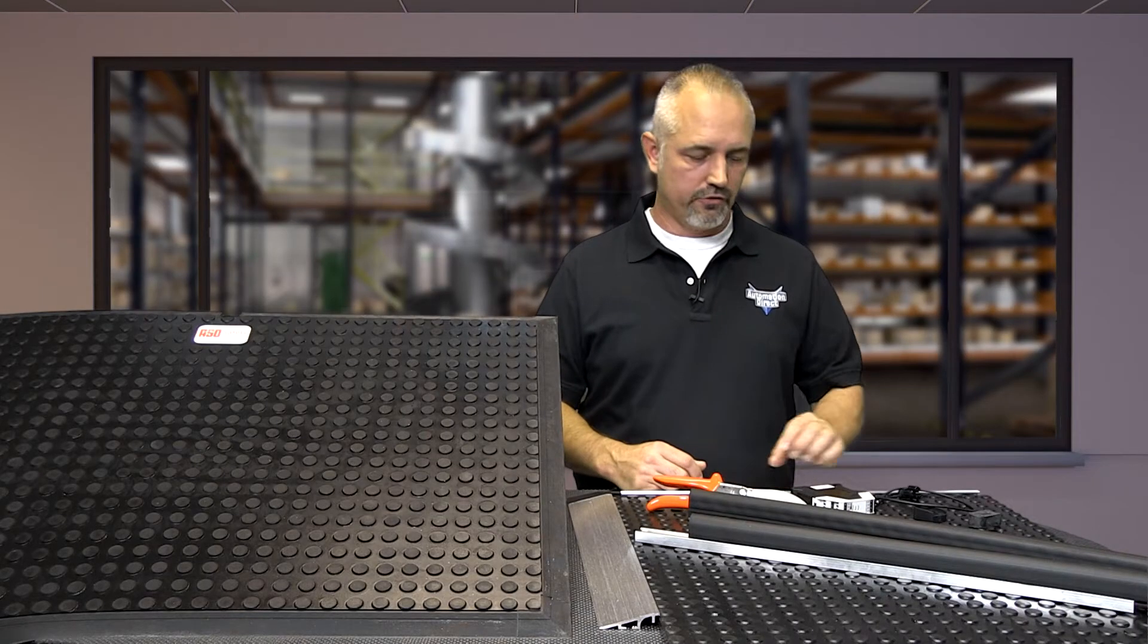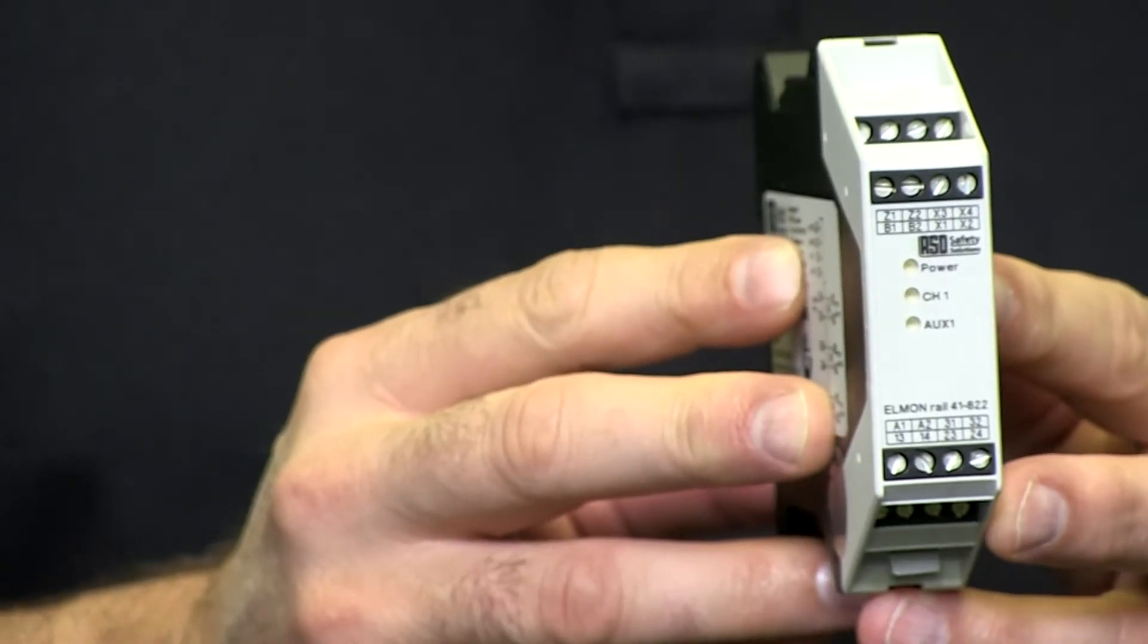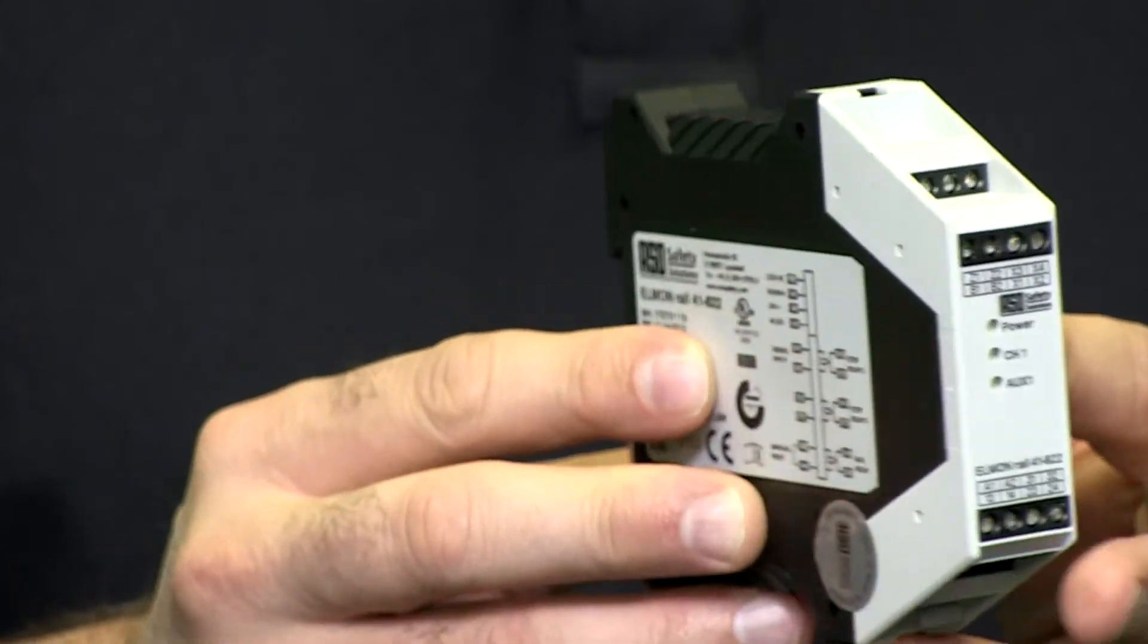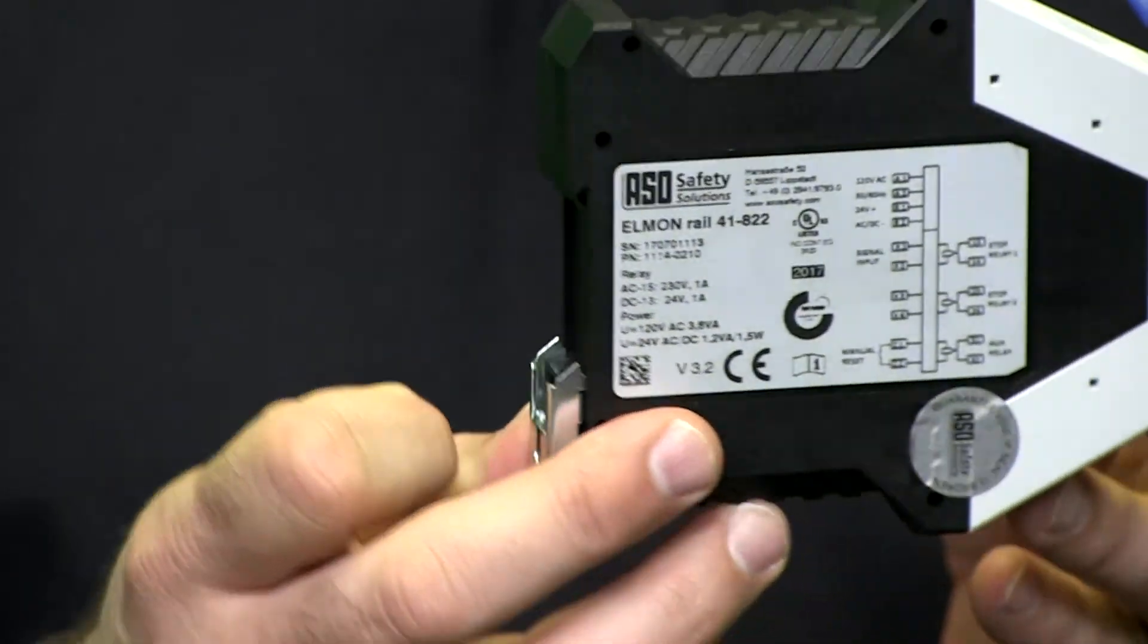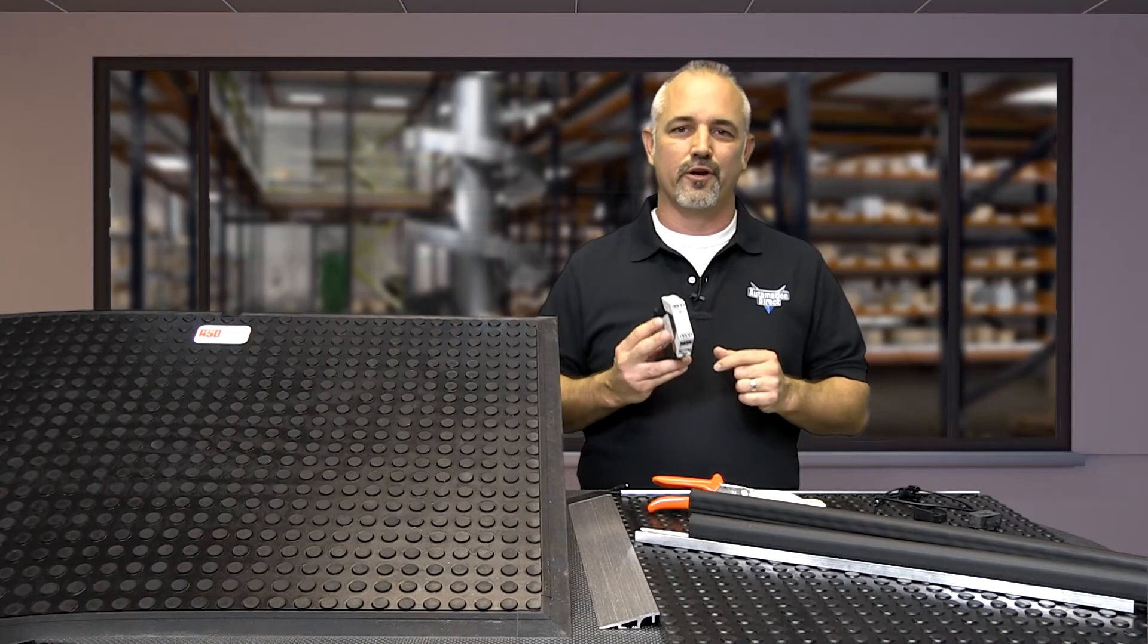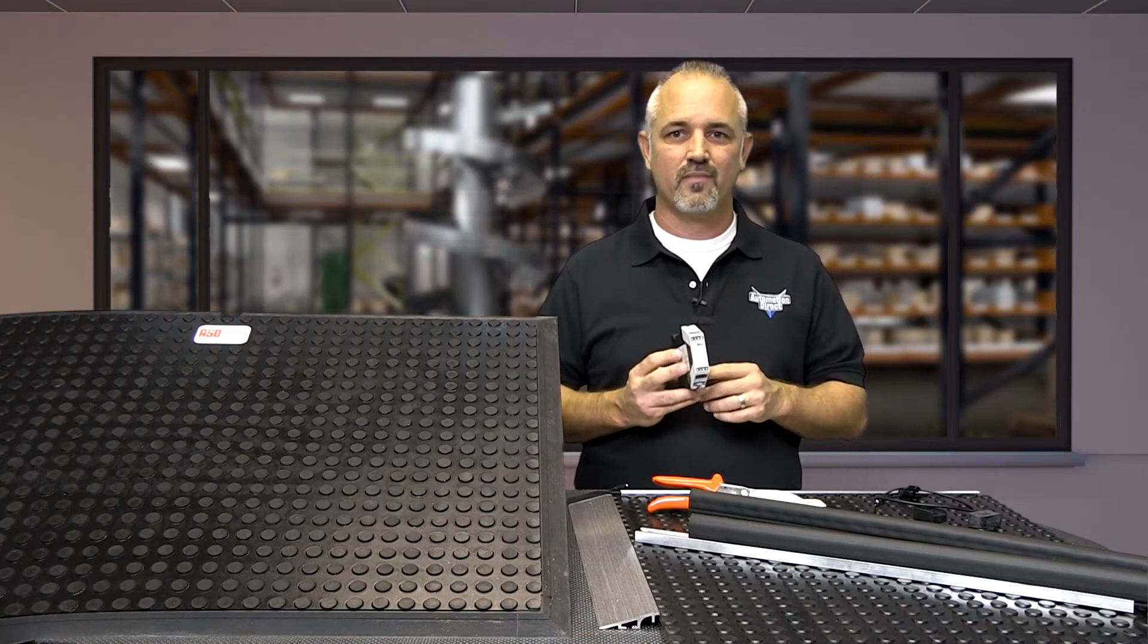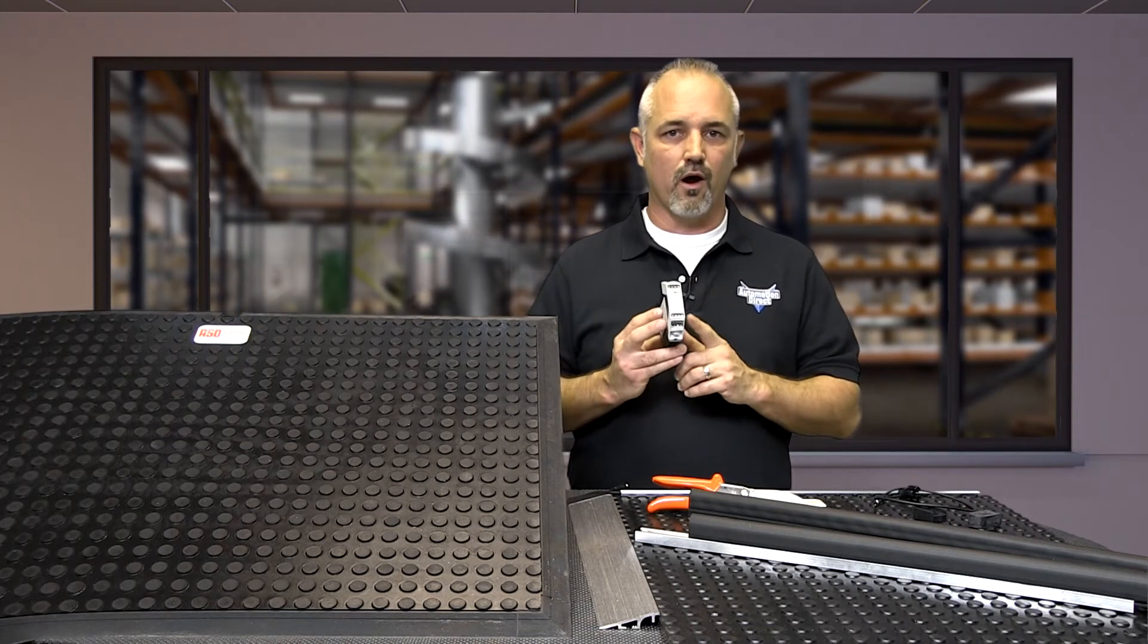To round out the new safety offering, AutomationDirect is also offering an ASO safety relay to be used with the mats and the edges. This safety relay can operate on supply voltages of 24 volts AC or DC or 120 volts AC. These ASO safety relays can only be wired in 2 wire configurations.